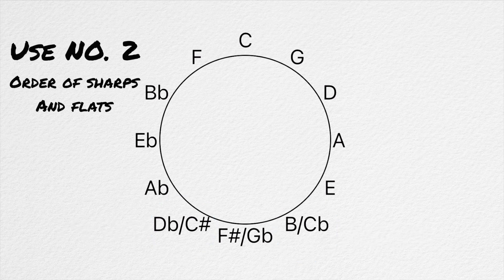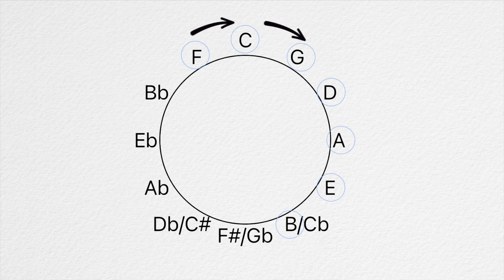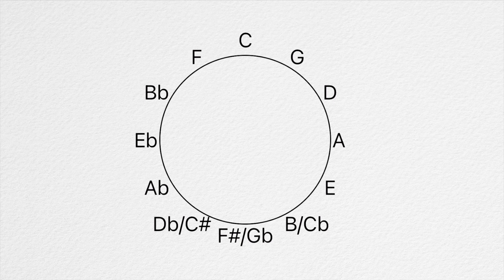If you ever forget the order of sharps and flats to add to each key signature, that information can be found on the circle as well. For the order of sharps, start on the F and move stepwise up to six times. Each time you move a step, you'll get the answer on which sharp comes next in the order of sharps. Again, the opposite is true for flats. Start on B flat and move counterclockwise to find your order of flats.